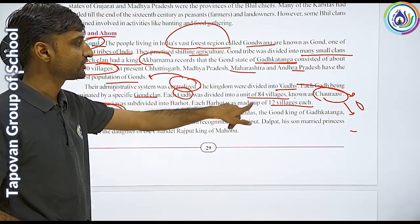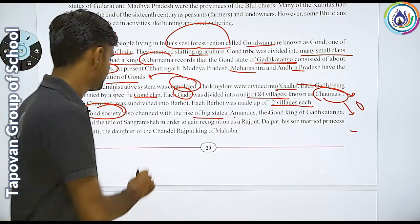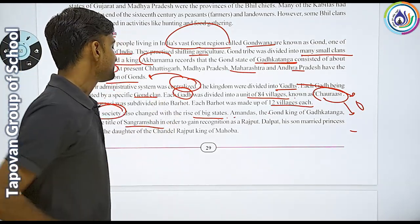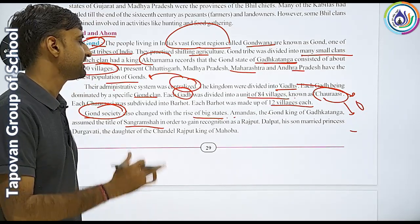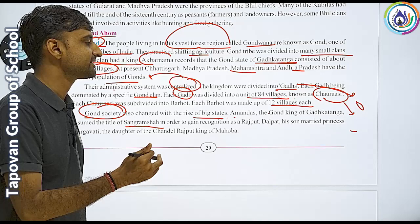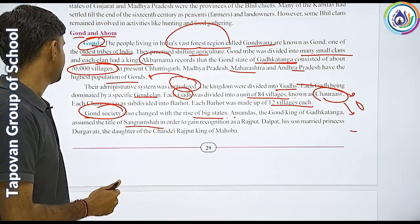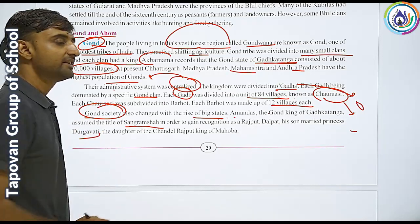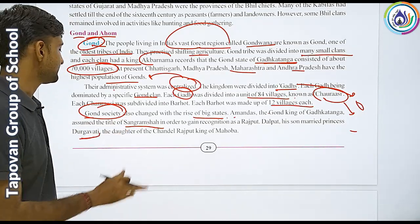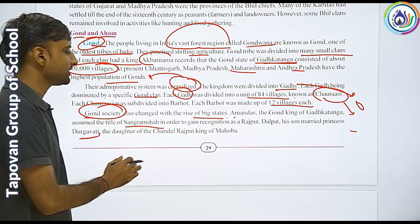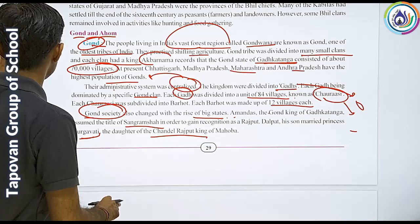The Gond society also changed with the rise of big states. The Gond king of Gadhkanga assumed the title of Sangram Shah in order to gain recognition as Rajput. His son Dalpat married Durgavati, the daughter of the Chandel Rajput king of Mahoba.